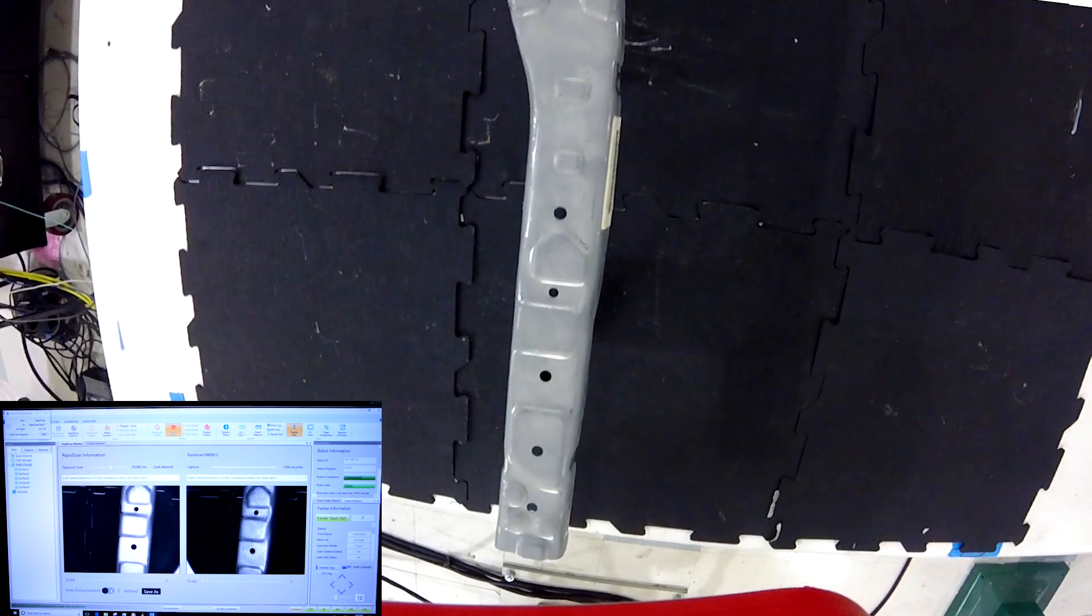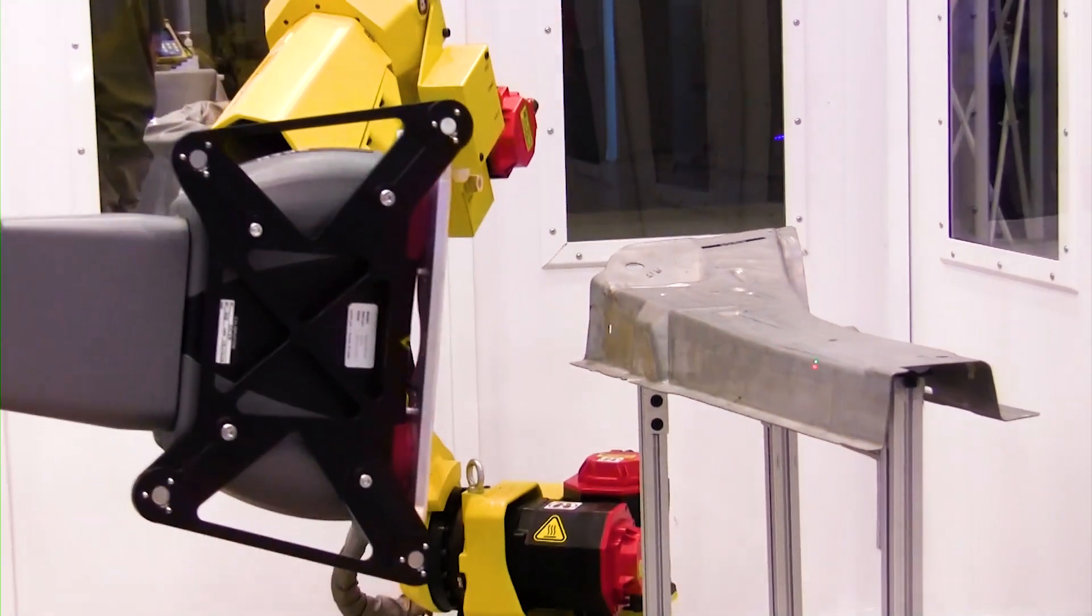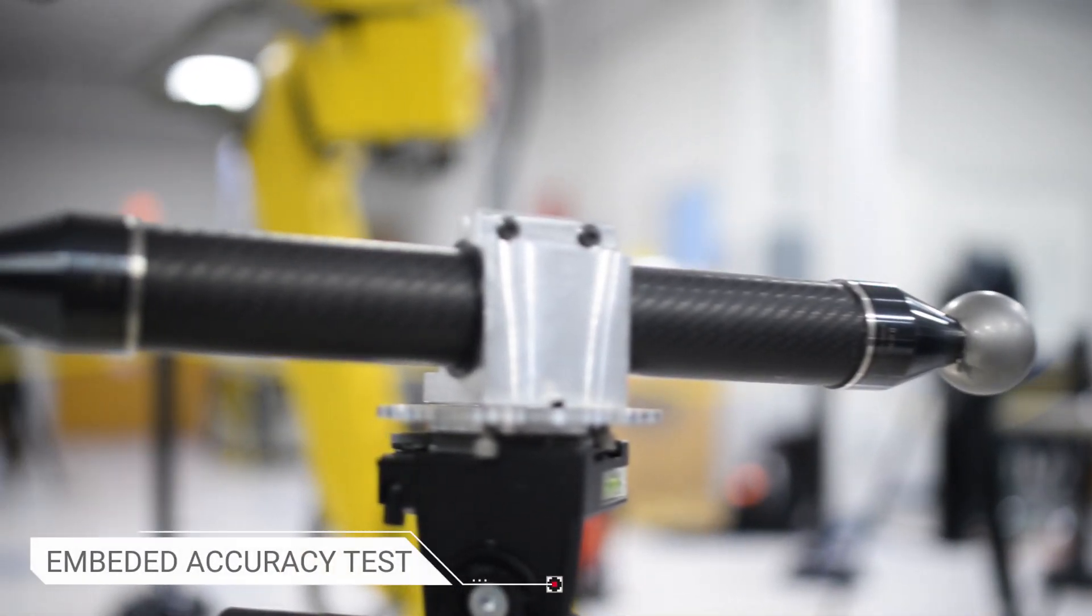The real-time 6-DOF robot tracking completely eliminates any requirement for problematic stickers used by photogrammetry robotic measuring systems and provides comparable CMM accuracy.